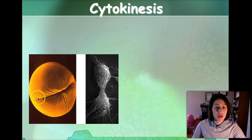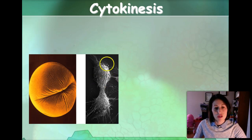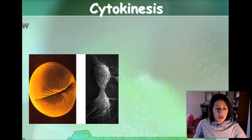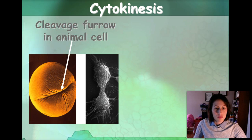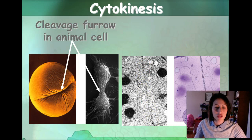Here is a picture of an animal cell, and you can see the cytoplasm starting to pinch in. Here is another picture of cells starting to pinch right there in the center. And then you can see right here the cell plate starting to form in a plant cell, which will eventually become the cell wall.